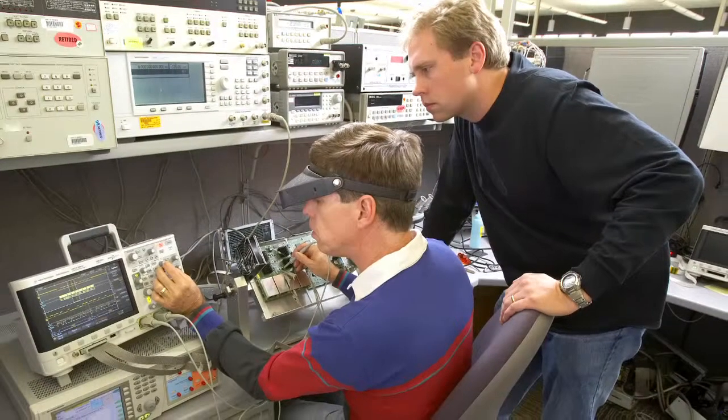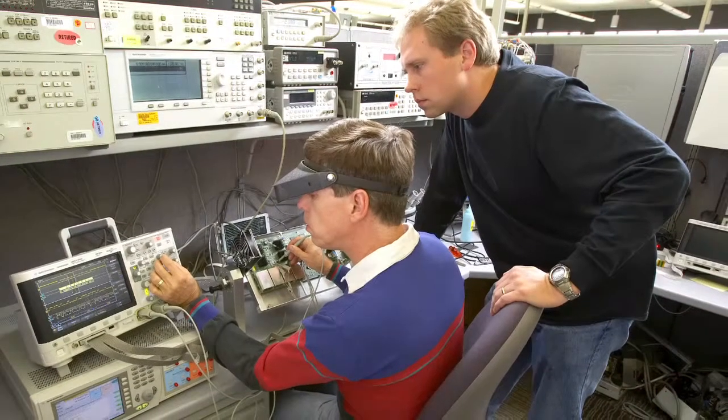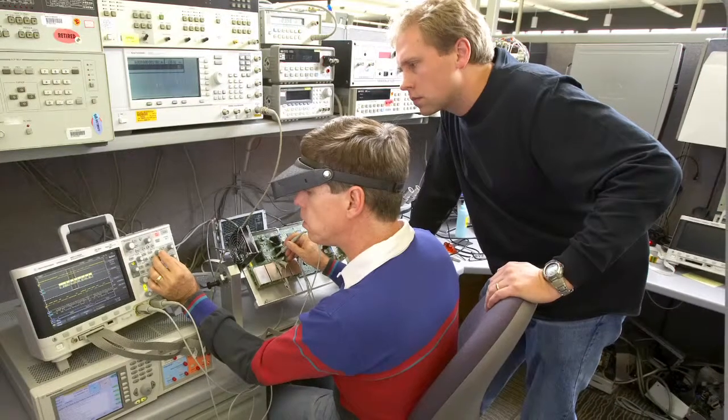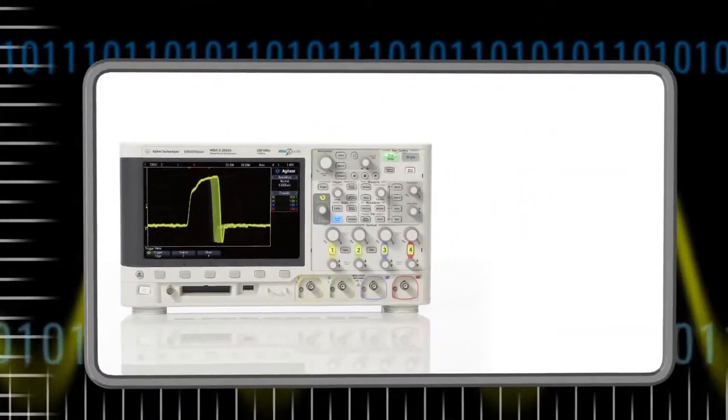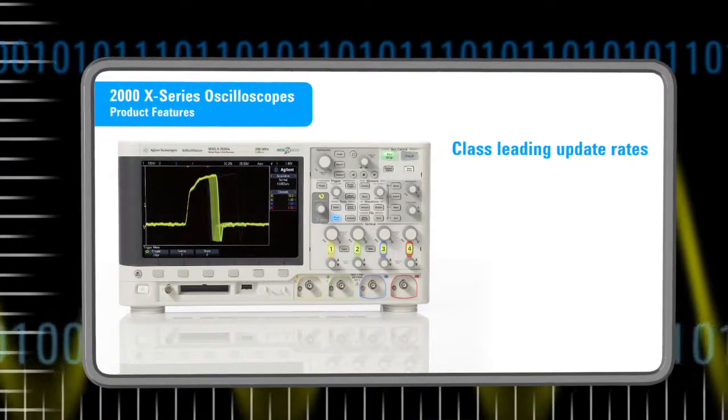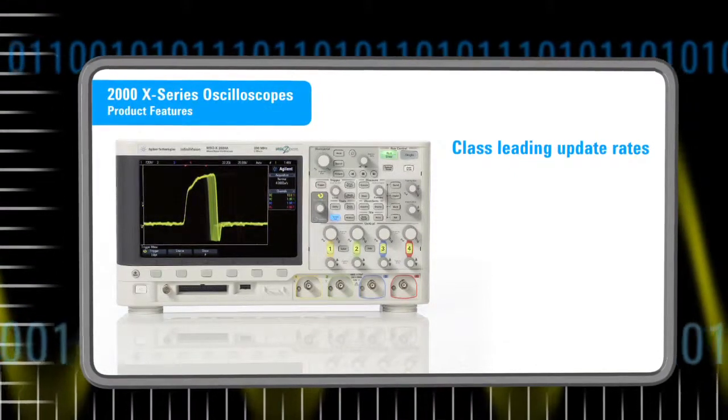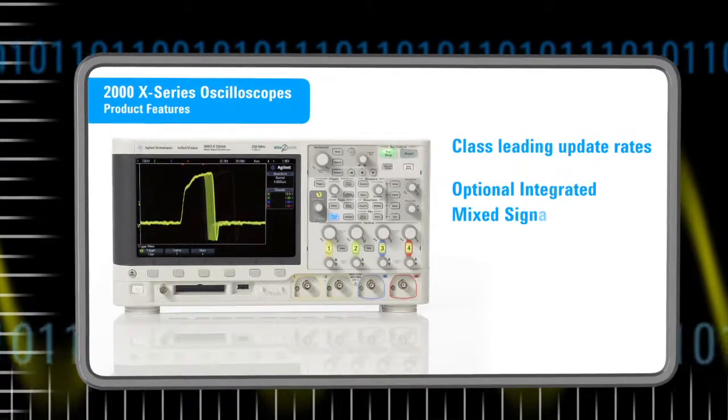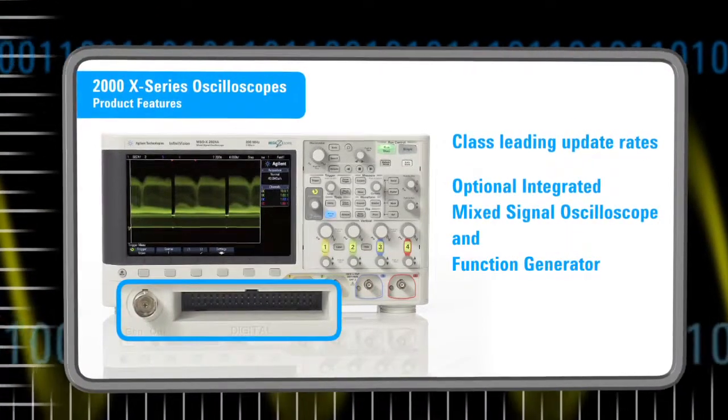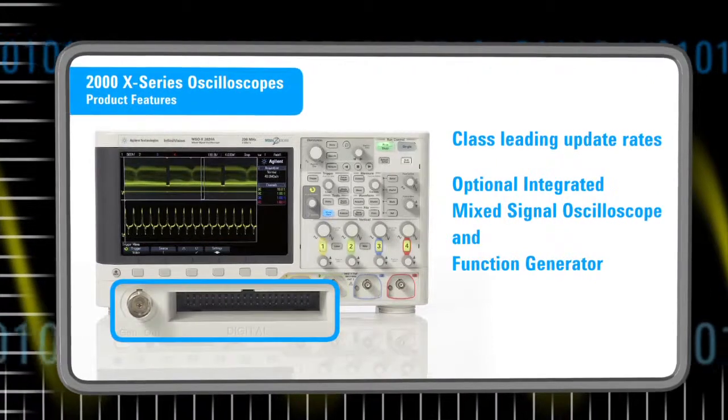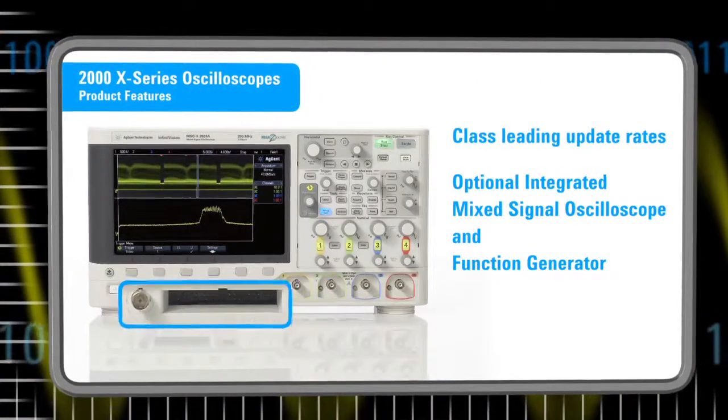For R&D engineers and hobbyists with limited budgets, the new 2000X series provides a great tool for basic troubleshooting and debug measurements. They feature waveform update rates that are 250 times faster than those of the competition, and the optional MSO and function generator means that you can make more measurements than you could with previous generations of products.